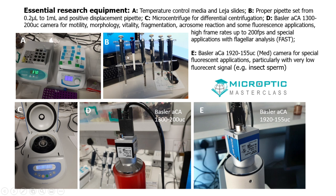You need a good set of pipettes, including anything from a 0.2 microliter pipette to a 1 milliliter pipette, including a positive displacement pipette. Often you have to wash semen, and when you do, you need to centrifuge it a little bit, so you need a good microcentrifuge. For your microscope, you need a good camera. We use the Basler ACA 1300 that can do 200 frames per second, which is ideal for 95% of applications, including basic fluorescence.